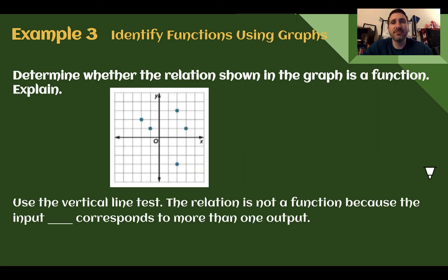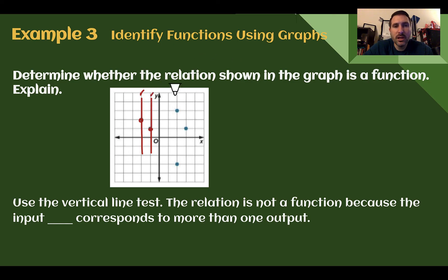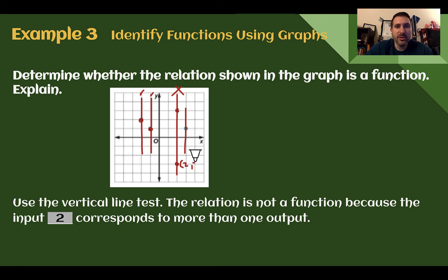Example 3: Identify functions using graphs. Determine whether the relation shown in the graph is a function — explain. Here we're given a bunch of dots, not connected, but we can still use the vertical line test. Drawing vertical lines: most go through only one point, but when I draw one here, it goes through one point up here and another point down below. The input of 2 corresponds to more than one output — down here, input 2 with output negative 3; up here, input 2 with output positive 3. Two went to two different things — not a function.